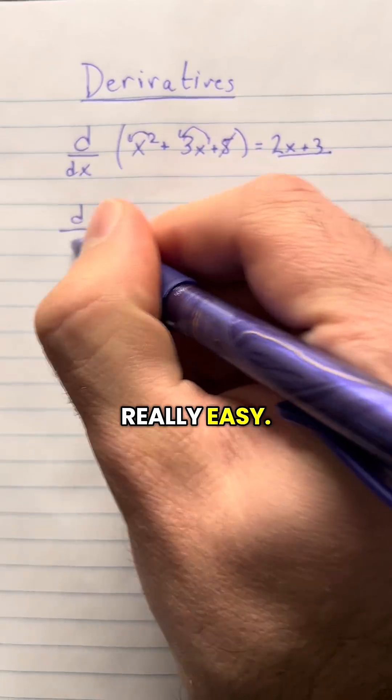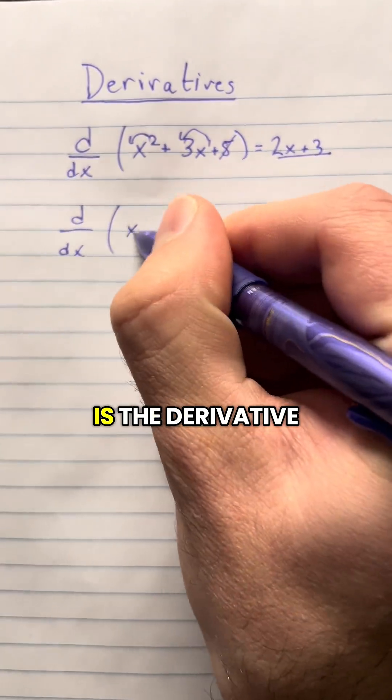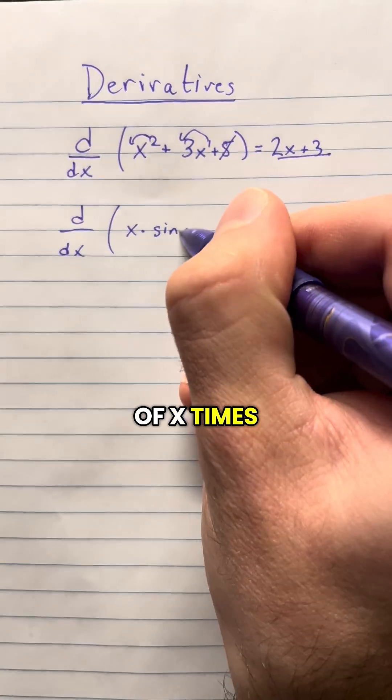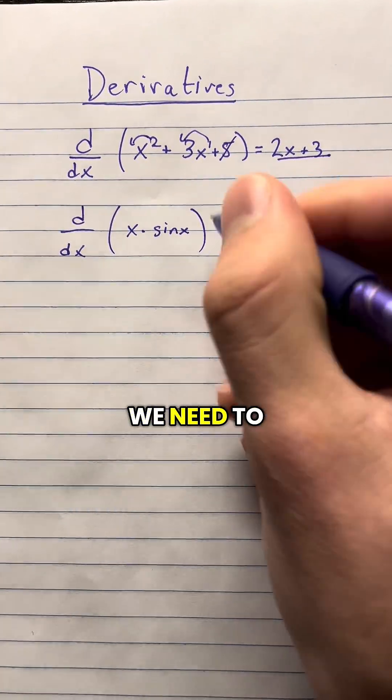But that's really easy. So what if we ask, what is the derivative of x times sine of x? Well, in this case, we need to use the product rule.